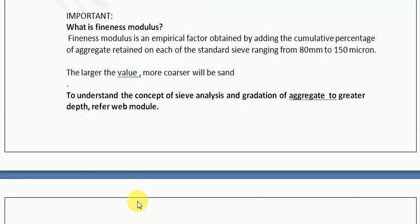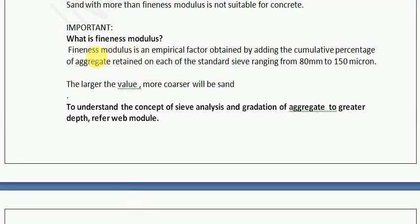Let us understand the importance of fineness modulus. Fineness modulus is an empirical factor obtained by adding the cumulative percentage of aggregate retained on each of the standard sieves ranging from 80mm to 150 micron. This you will automatically understand once you understand the sieve analysis test. To understand this sieve analysis test and gradation, you must review the videos provided in the web module so that you understand in greater depth and clarity through the visuals.